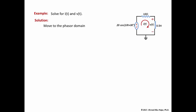To move to the phasor domain, the first thing we need is omega — the angular frequency of the cosine signal. Omega is the coefficient next to the t value. In this particular example, omega equals 10 radians per second.